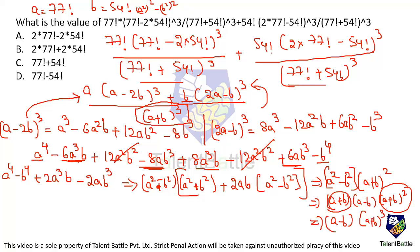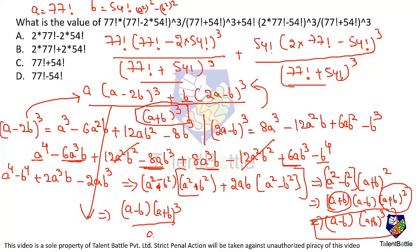Substituting back into the full expression: the numerator is (a − b)(a + b)³ divided by (a + b)³, so (a + b)³ cancels, leaving just (a − b). Since a = 77! and b = 54!, the answer is 77! − 54!, which is option D.